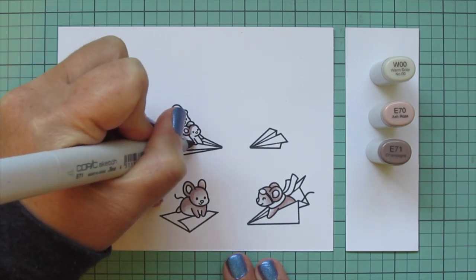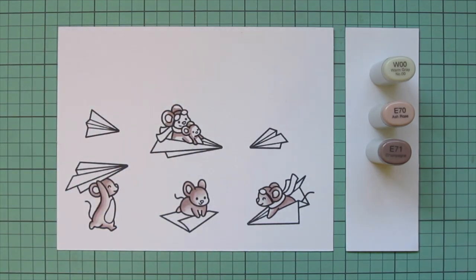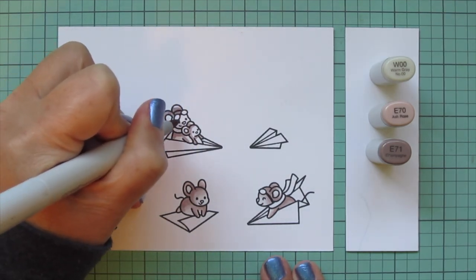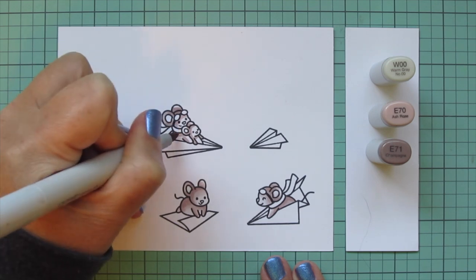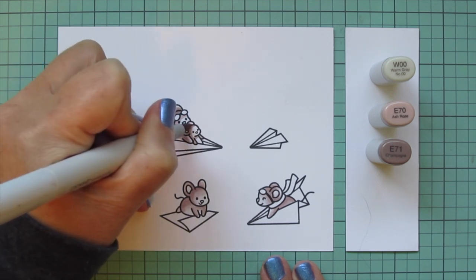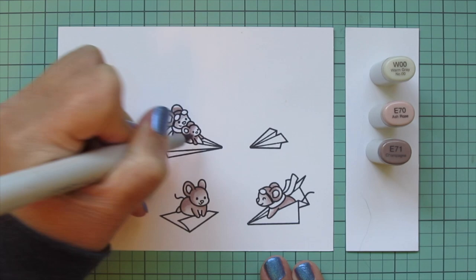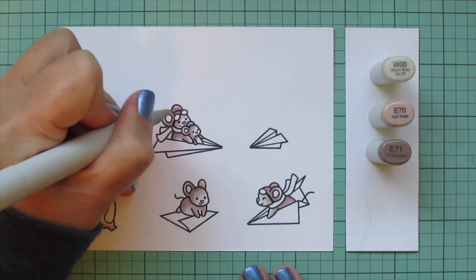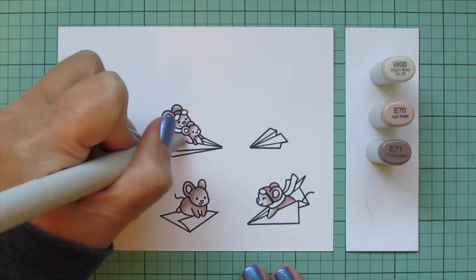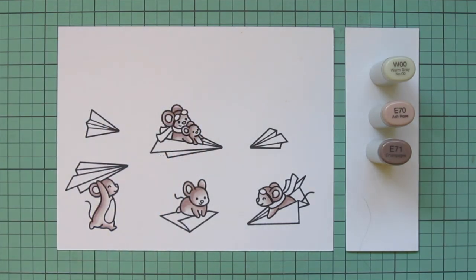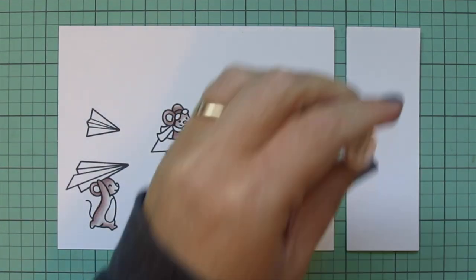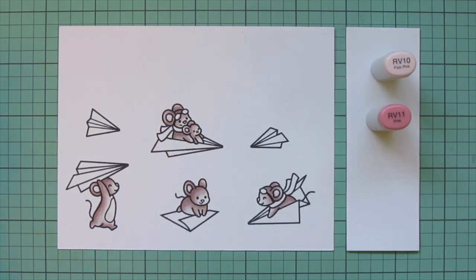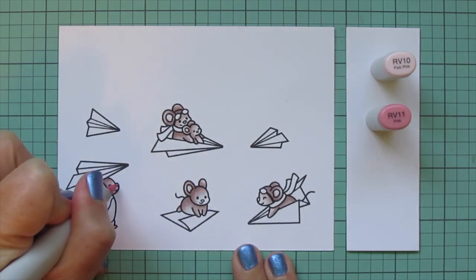I especially love the little baby mouse that's sitting in front of his dad or mom, whatever you want it to be, in the little paper airplane. I think he's super adorable. I did do a second layer on all of the mice except for the baby. I wanted the baby to be just a little bit lighter than the other guys so I just left him with one layer, but I did go back and do a second on everybody else.